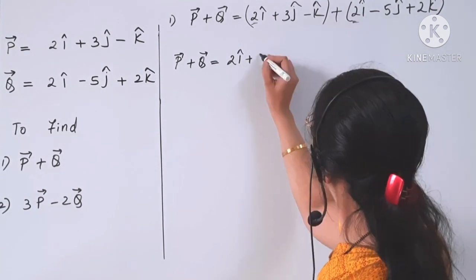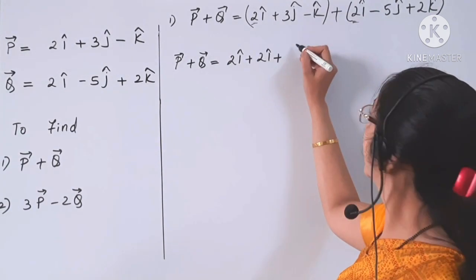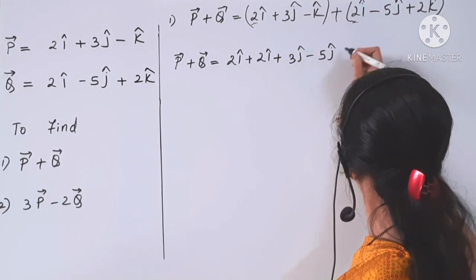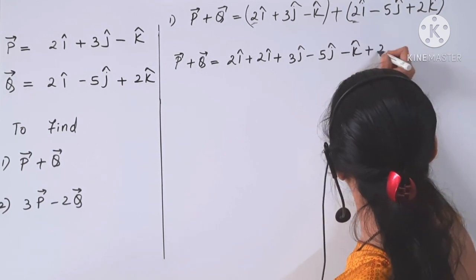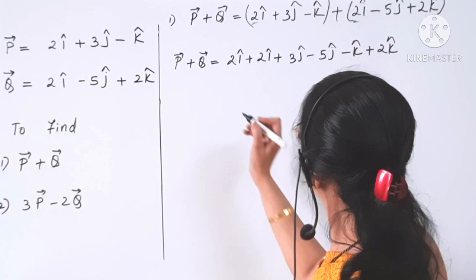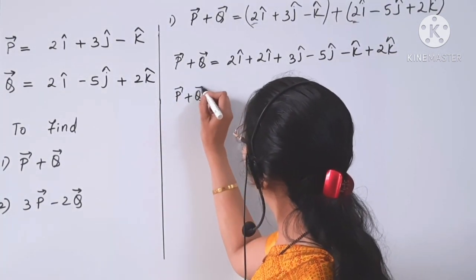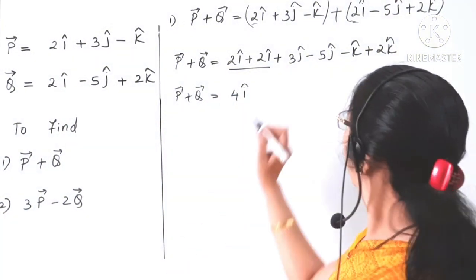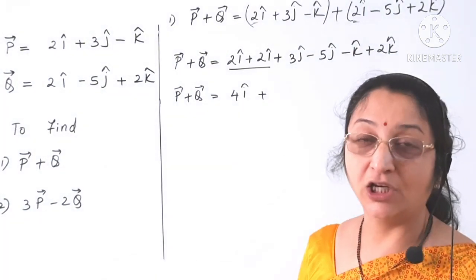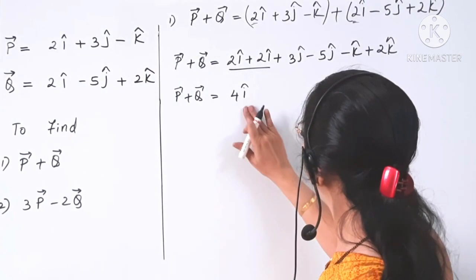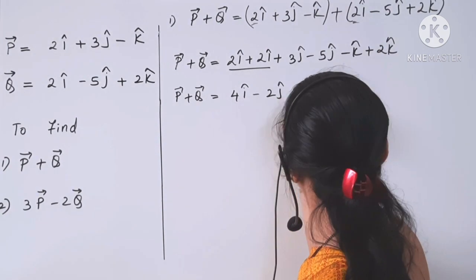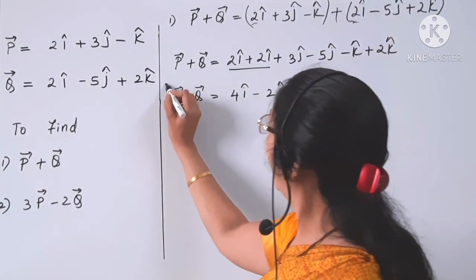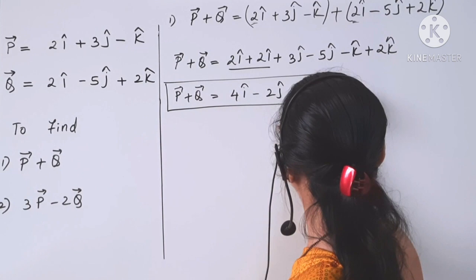So p plus q: we rearrange and group components by axis — x-components together, y-components together, and z-components together. This gives 2i plus 2i, that is 4i; plus 3j minus 5j, that is minus 2j; and minus k plus 2k, that is plus k. So p plus q equals 4i minus 2j plus k.